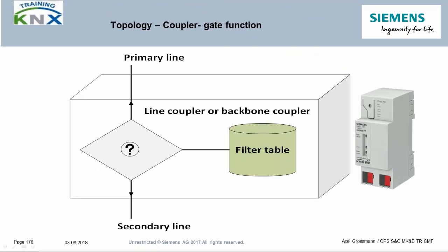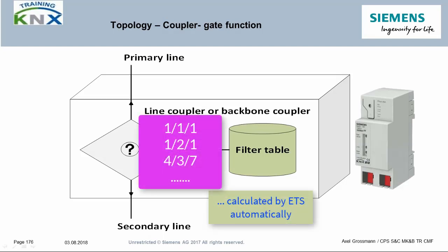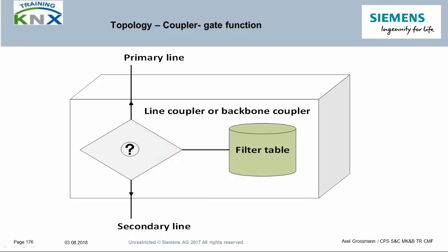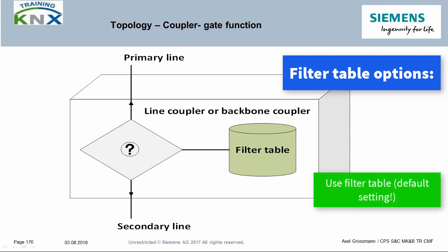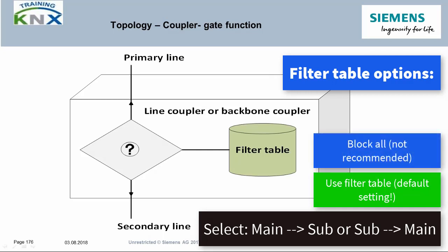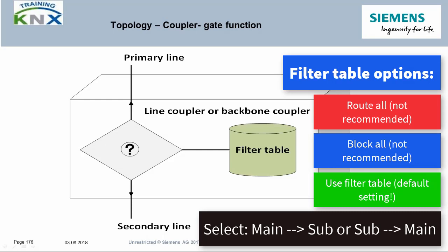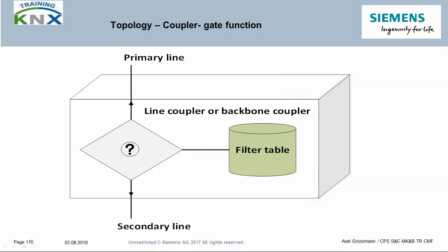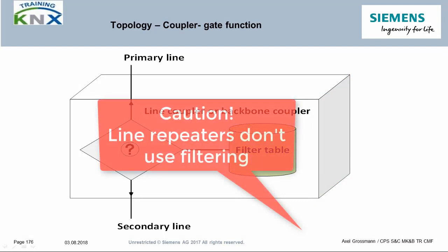The filter table of the couplers — more precisely the line and area couplers — is automatically calculated by ETS during the creation of address links between the communication objects. The project engineer can also use various parameters to determine whether group telegrams are only forwarded in one of the two directions, whether they are generally blocked or generally forwarded. It should be emphasized that couplers used as line repeaters do not have a filter table, because there was no need to optimize the possible threefold extension of the sublines with filter tables.